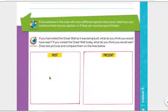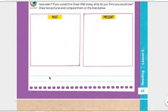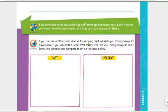And then we finished with this. If you have visited the Great Wall, right? Here it says, if you have visited the Great Wall as it was being built, what do you think you would have seen? If you visited the Great Wall today, what do you think you would see? Draw two pictures and compare them on the lines below. So, here, guys.